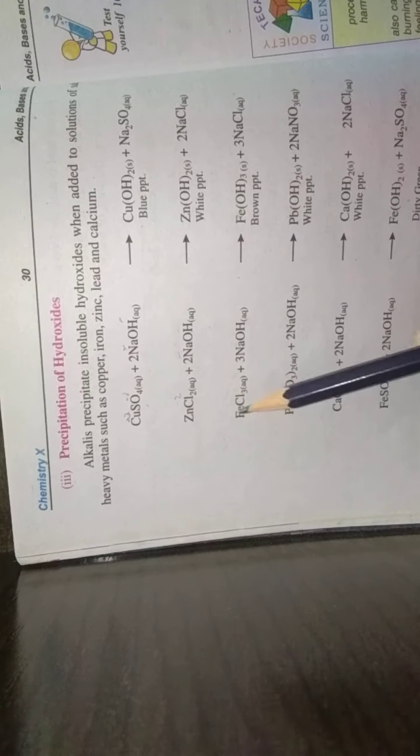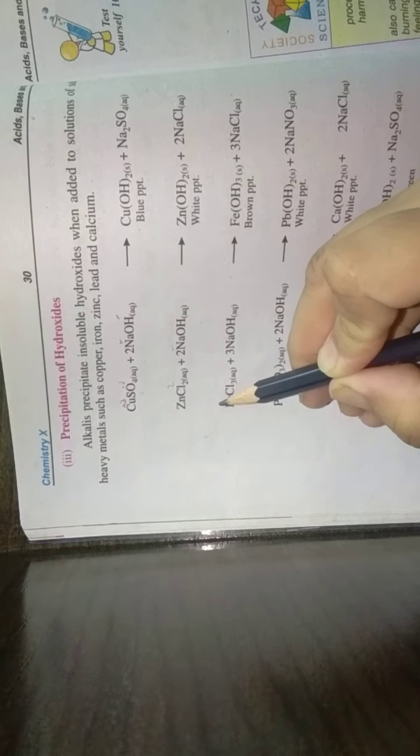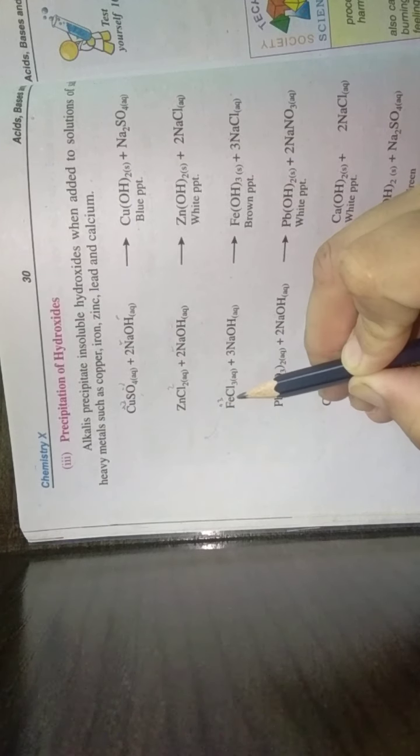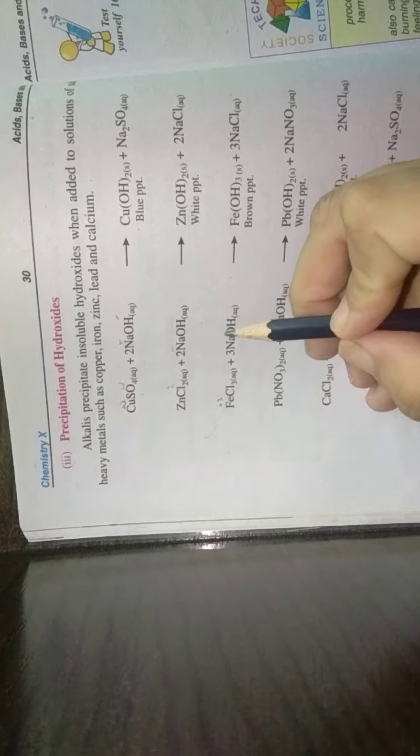Zinc hydroxide white precipitates, sodium chloride. Ferric chloride plus sodium hydroxide, same: ferric has plus three charge, so here three hydroxyl combine and brown precipitates form. We have sodium chloride. Next is lead nitrate plus sodium hydroxide, white precipitates form: lead hydroxide or ferric hydroxide and sodium nitrate.